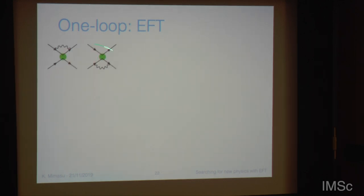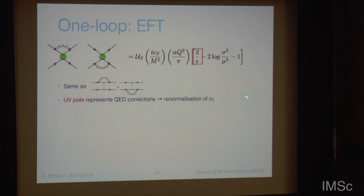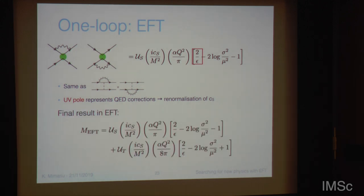On the EFT side, the story is quite similar. The diagram analogous to the first full-theory diagram can be written down by replacing the heavy propagator by a 1/M squared, revealing a UV pole and a regulated IR divergence, with the UV pole proportional to C_S related to a renormalization of the EFT coefficient. But permuting the gamma matrices again yields a result proportional to the U_T structure — the second operator — not the original one. So you have a pole in a different Lorentz structure than what you started from, meaning you need an operator counterterm proportional to C_T to cancel this divergence. This is what leads to operator mixing under renormalization group evolution.